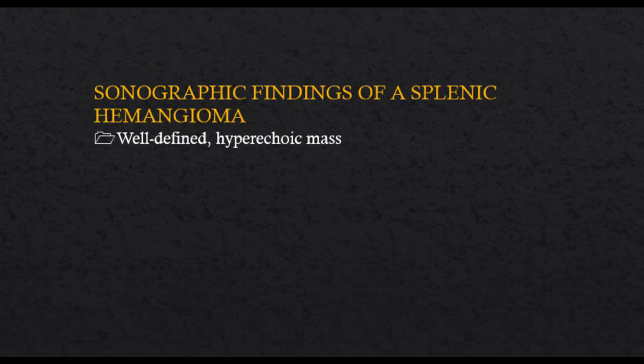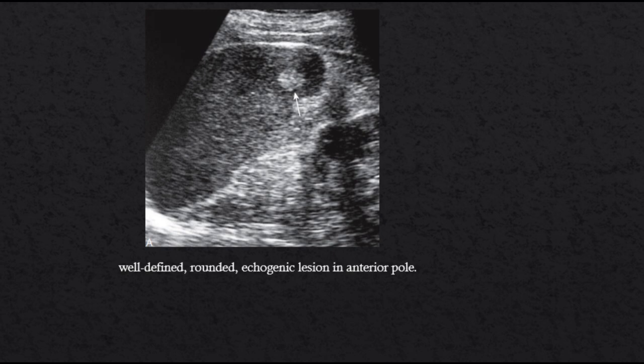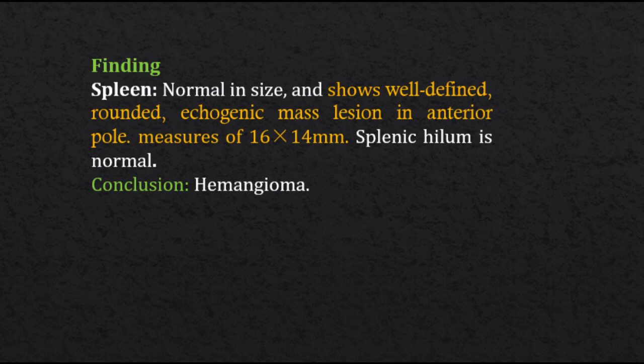Sonographic findings of a splenic hemangioma: well-defined hyperechoic mass; well-defined rounded echogenic lesion in the anterior pole. Case finding: spleen normal in size and shows a well-defined rounded echogenic mass lesion in the anterior pole, measuring 16 by 14 mm.